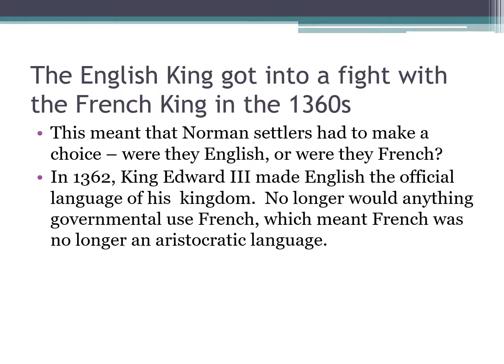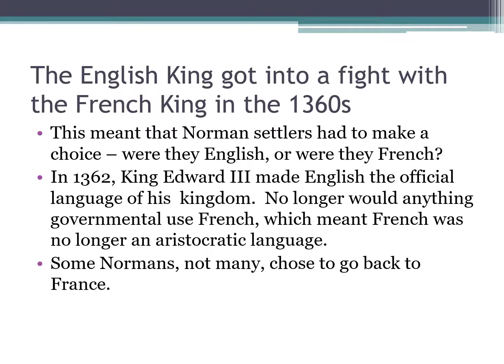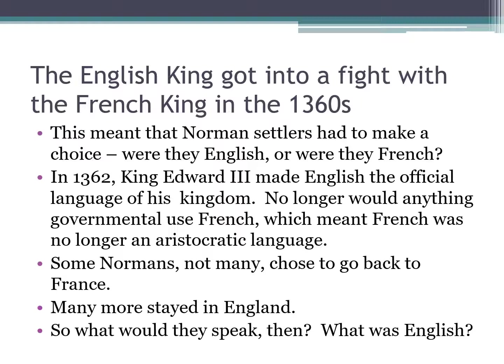In 1362, King Edward the Third — who, by the way, built Windsor Castle where that recent royal wedding happened — made English the official language of his kingdom. No longer would government use French, which meant French was no longer an aristocratic language. Some Normans chose to go back to France, but many more stayed in England. As a result, English was the official language, but French was already all over English — so what would they speak?